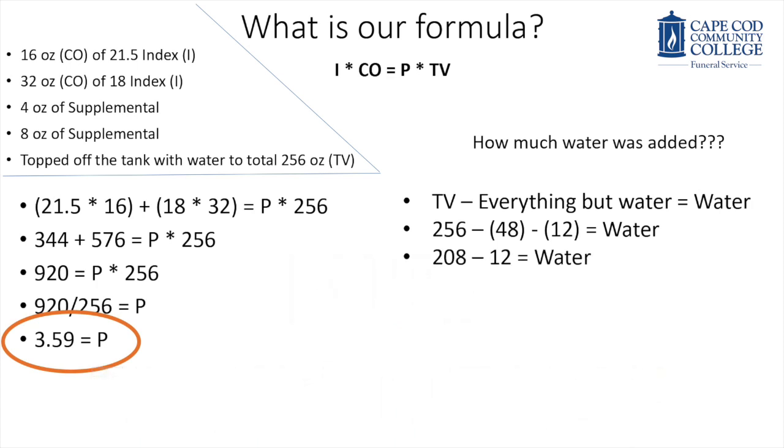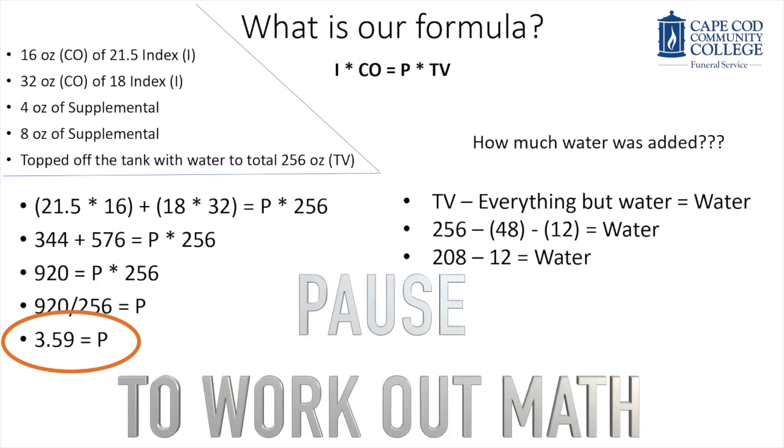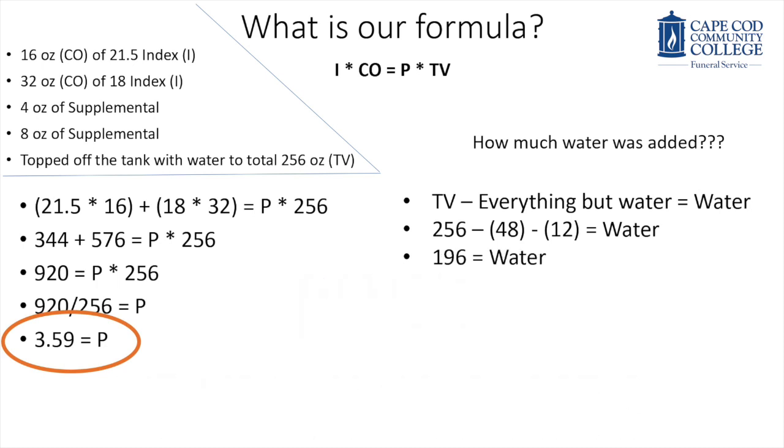If we subtract 48 ounces of arterial fluid from the 256, we get 208. And when we subtract the 12 ounces of supplemental, we are left with 196 ounces of water, which is slightly less than a gallon and a half of water.